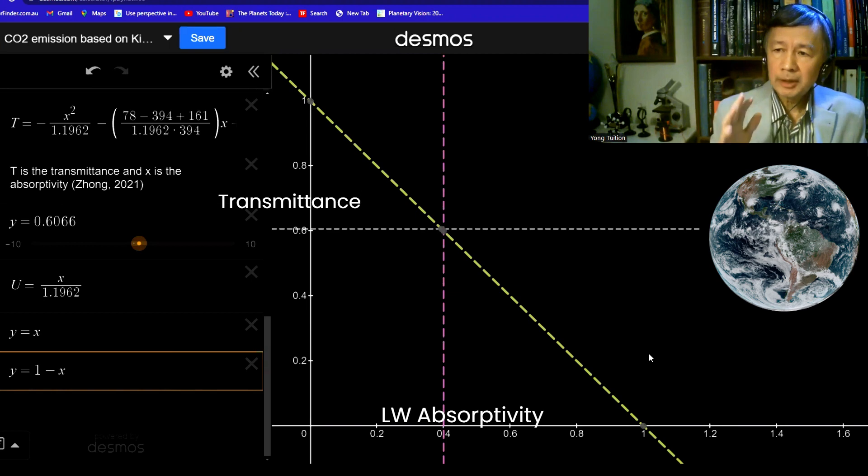Without modifying the original form of Kirchhoff's law for radiation, the dependence of the longwave absorptivity is linear, as shown by this dashed green line.